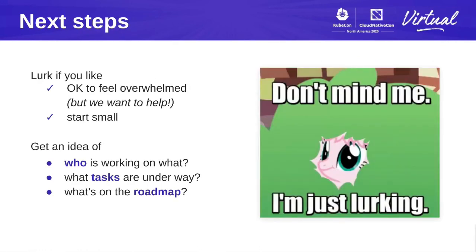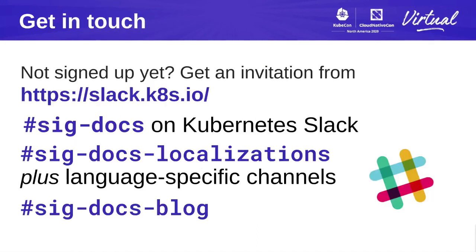It's okay to feel overwhelmed at first. You can start small to get an idea of who is working on what, what tasks are underway, and what's on the roadmap. To get in touch, sign up for Slack at slack.k8s.io and drop by our channel in SIG docs. There are also channels for subgroups: SIG docs localization and SIG docs blog. Come and say hello and feel free to ask questions.